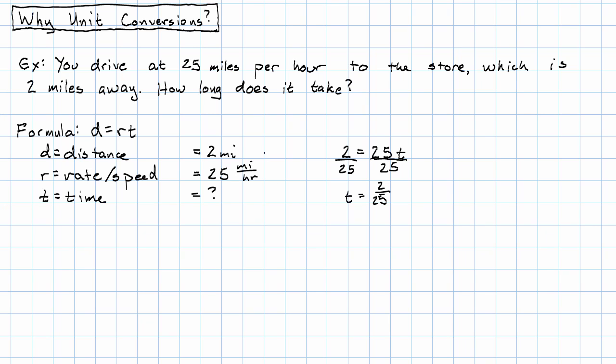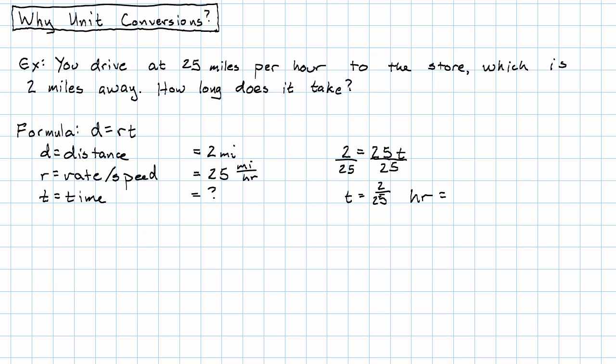Thinking about the units, our distance was in miles. Our speed was in miles per hour. Our time must be in hours. 2 twenty-fifths of an hour. Or if you like decimals better, 2 divided by 25, that's 0.08.